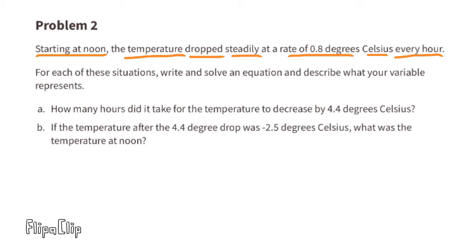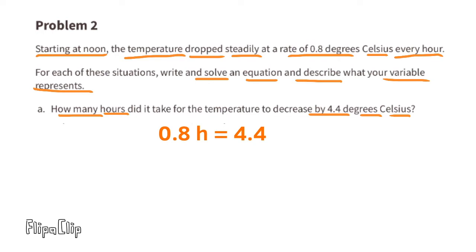Problem number two: starting at noon, the temperature drops steadily at a rate of 0.8 degrees Celsius every hour. Part A: how many hours did it take for the temperature to decrease by 4.4 degrees Celsius? We can write the equation like this: 0.8 degrees times an unknown number of hours equals 4.4.